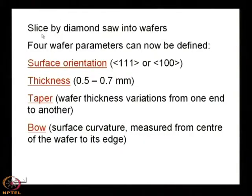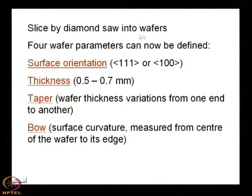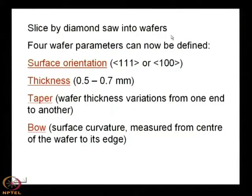After grinding the flats, the ingot is sliced by a diamond saw into wafers. You have started with a high purity material, grown an ingot from the melt using a seed, confirmed the diameter, made primary and secondary flats, then sliced into wafers. That wafer acts as the substrate for device fabrication and successive operations.